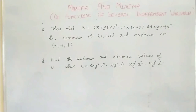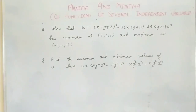The first question is: show that u = (x + y + z)³ · (x + y + z minus 24xyz) + a³ has a minimum at (1, 1, 1) and a maximum at (minus 1, minus 1, minus 1). You have to find del u / del x, del u / del y, del u / del z, set them equal to 0, find the stationary points x, y, z.